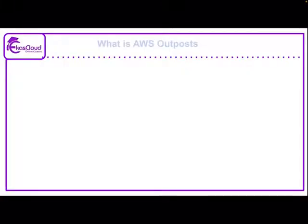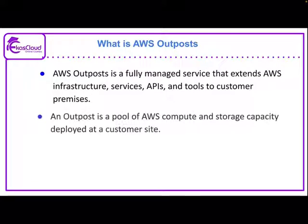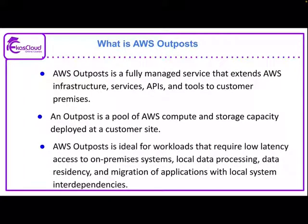We start with what is AWS Outpost. AWS Outpost is a fully managed service that extends AWS infrastructure, services, APIs, and tools to customer premises. An Outpost is a pool of AWS compute and storage capacity deployed at a customer site. AWS Outpost is ideal for workloads that require low latency access to on-premises systems, local data processing, data residency, and migration of applications with local system interdependencies.